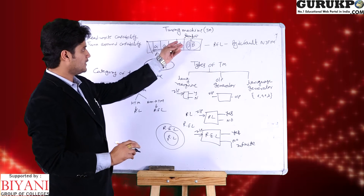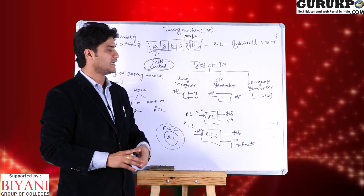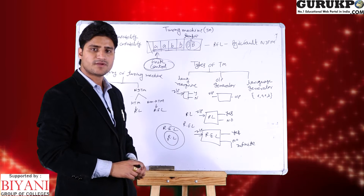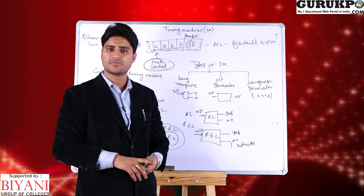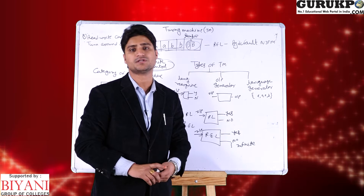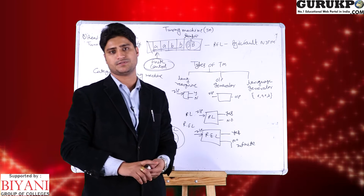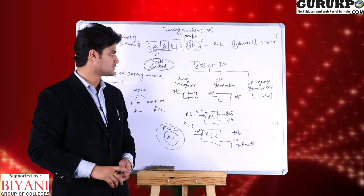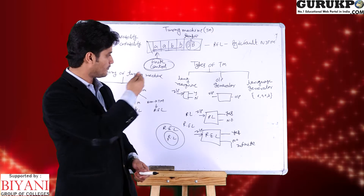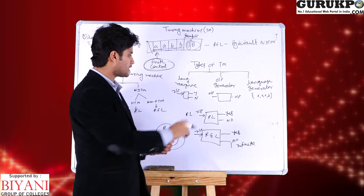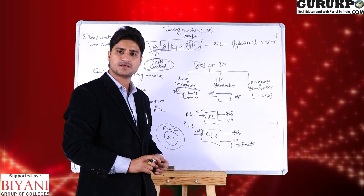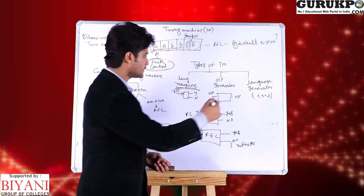The language behind the Turing machine is recursive enumerable language, and by default Turing machine is a non-deterministic Turing machine. The types of Turing machine are the same as finite automata: first is language recognizer, second is output generator, and third is language generator.